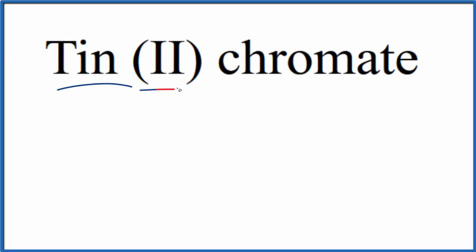To write the formula for tin(II) chromate, first we need to write the element symbol for tin. That's just Sn. The Roman numeral II in parentheses tells us that tin will be 2+. For the chromate,